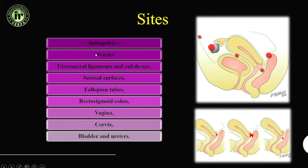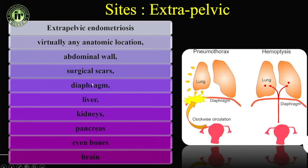The intrapelvic sites include ovaries, uterosacral ligament, serosal surface, fallopian tubes, rectosigmoid colon, vagina, cervix, bladder, and urethra. Extrapelvic sites are virtually any anatomic location — publications exist for intraspinal and intracranial endometriotic deposits, though these are very rare.